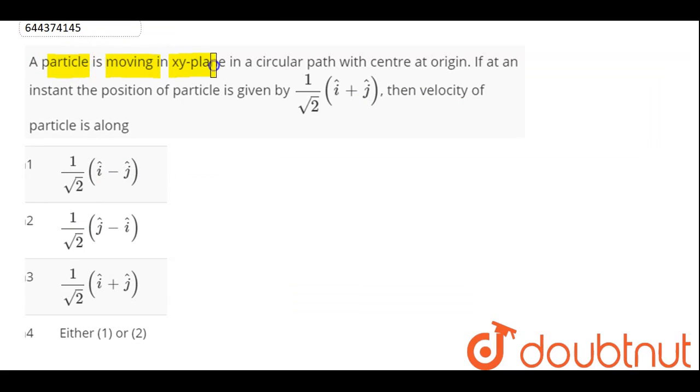Question is, a particle is moving in x-y plane in a circular path with center at origin. If at an instant, the position of particle is given by 1 by root 2, i plus j, then velocity of the particle is along.